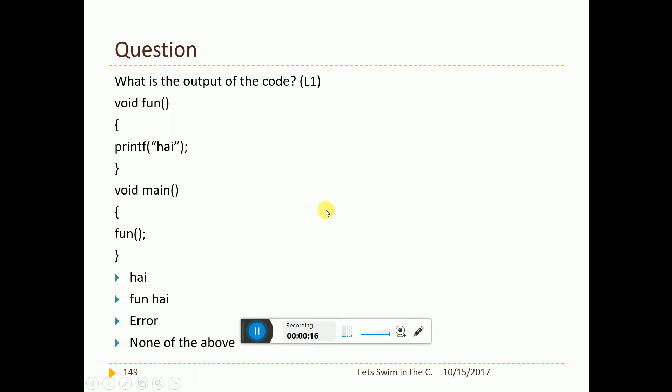We will quickly make it. First question, void function print high. Here main, we are calling the function. Is there anything difficult in this question? Nothing is difficult here. We are just calling the function. That's all. Now this function when you call, it will go here, it will then come here. It will just print high. There is no difficulty in this function.